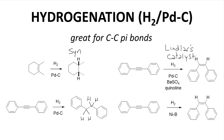The lower reaction is the same, except it uses a different catalyst — in this case, a nickel boride catalyst. Again, it's a syn addition. Other metals can be used in hydrogenations, but palladium or platinum is the most common one shown in college organic chemistry.